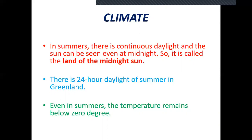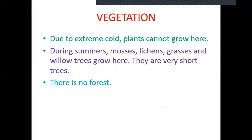Even in summer, the temperature is less than zero degrees. For the growth of any plants or trees, two factors are essential: sufficient rainfall and good temperature. Both are missing in Greenland, which is why we cannot find any trees or bushes. But in summer, in some places, ice will start melting, and then a few small plants like mosses, lichens, grass, and willow trees grow. They are only one or two centimeters in height.